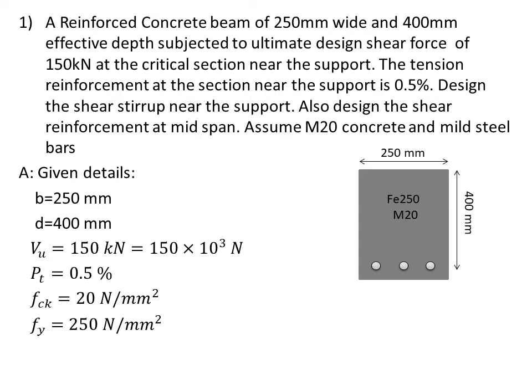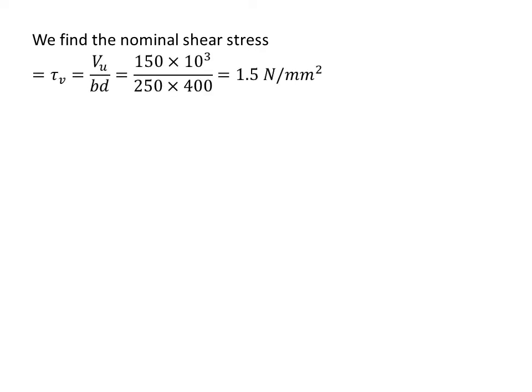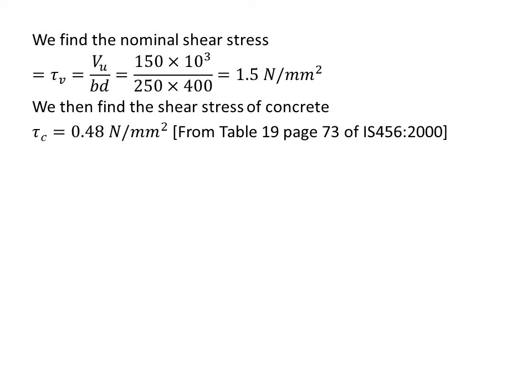Now let us calculate τV, the nominal shear stress. τV = VU / (B × D). Substituting the values, we get τV = 1.5 N/mm². Next, we find the shear stress of concrete τC from Table 19 of the IS code, using the corresponding values of percentage of steel and grade of concrete. We get τC = 0.48 N/mm².